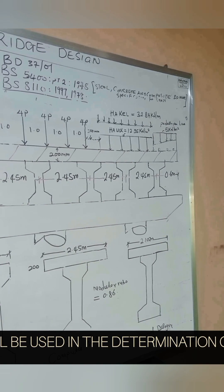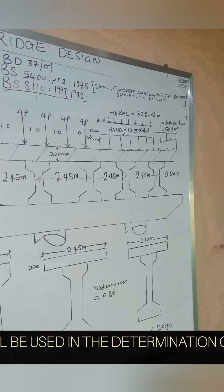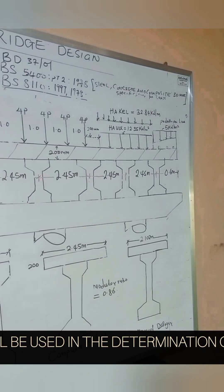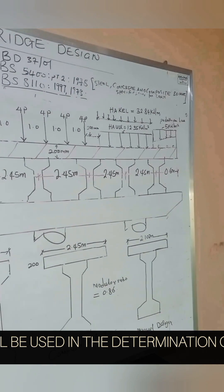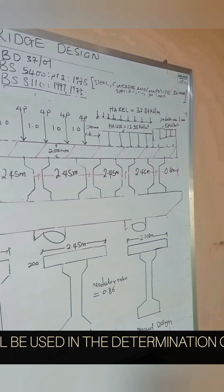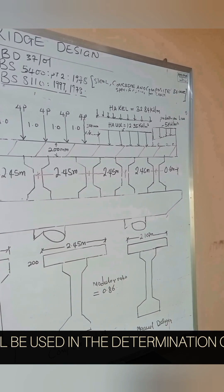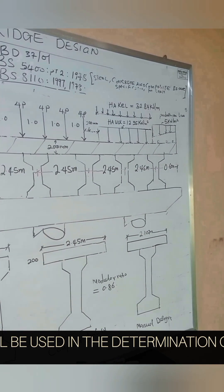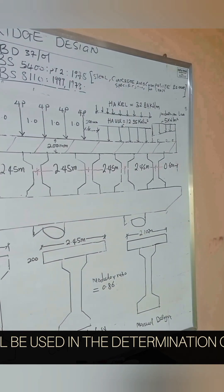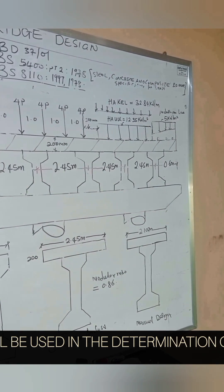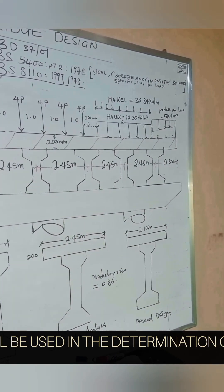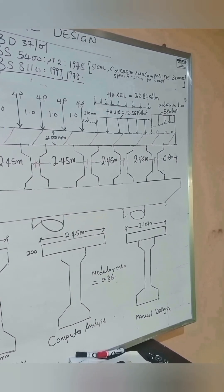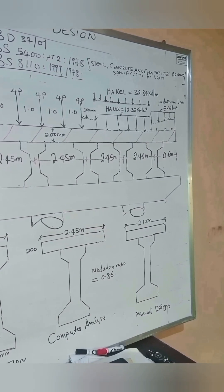Let's determine the moment of inertia of the I-section on the board. The moment of inertia will be obtained using the parallel axis theorem. The section will be discretized into seven sections. We will get the moment of inertia of each of those sections and sum them. But first, we must get the centroid — the neutral axis — of this I-section.